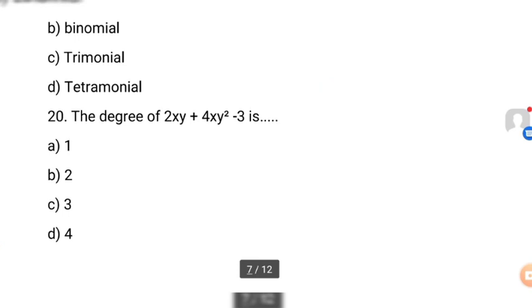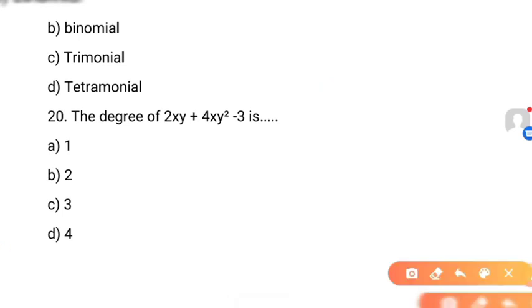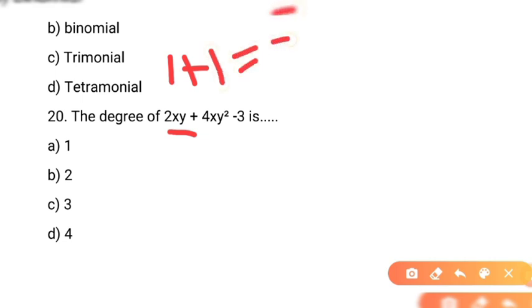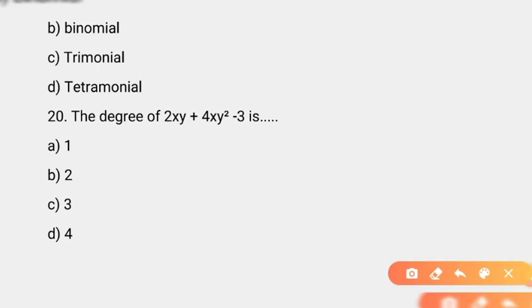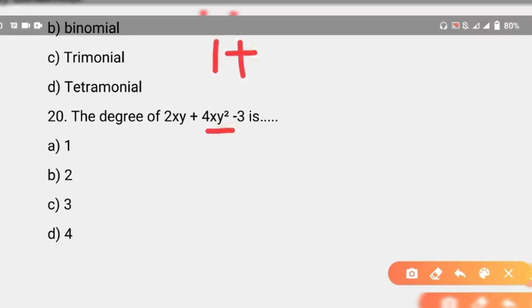Question number 20: the degree of xy + 4xy² - 3 is? Yahan degree ki baat kar rahe hain — yaani variables ke exponents ki power. Degree kaise nikalein ge? Pehle term xy mein: x ki degree 1, y ki degree 1 — in ko plus karein to 1+1 = 2. Is term ki degree 2 hai. Doosre term 4xy² mein: x ki degree 1, y² ki degree 2 — plus karein: 1+2 = 3.